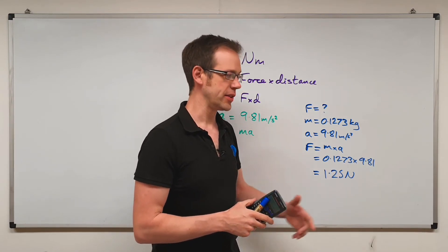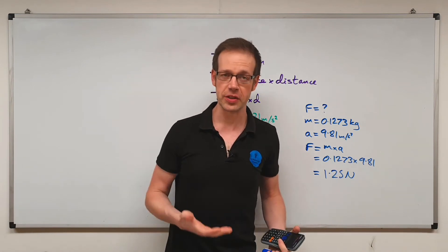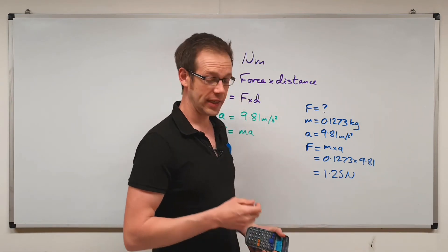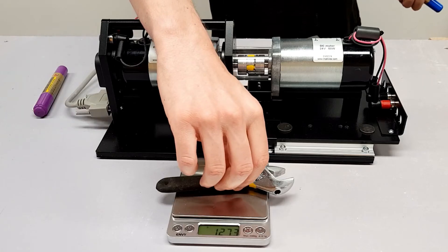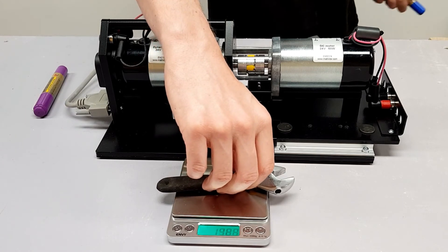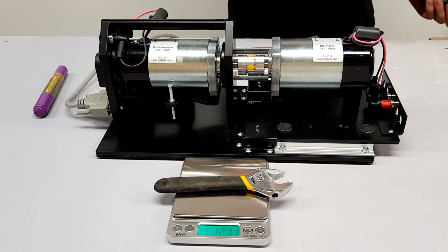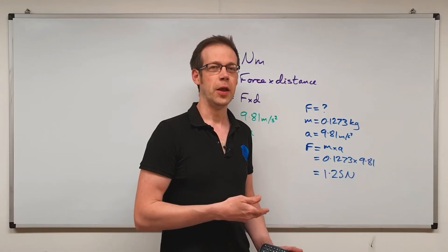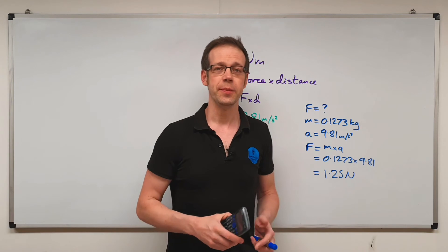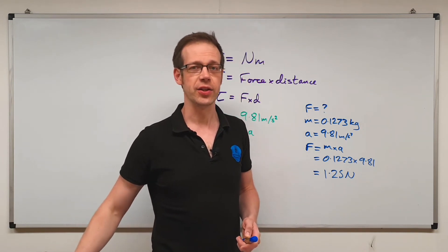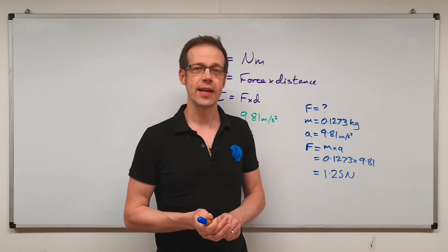So that spanner is being pulled down towards the Earth's surface with a force of 1.25 newtons. So that's quite an interesting concept there. So you can actually do this for yourself. If I want to lift this up, I need to apply a force of just more than 1.25 newtons to get it off the scale there. That kind of gives you an idea of the scale of how much a newton is. But what's the upshot of this? What does this mean for us and our experimentation that we're going to be carrying out on this test rig?